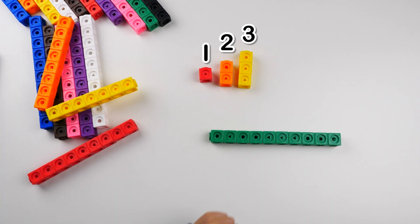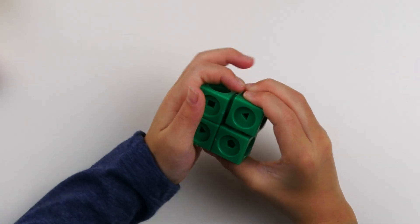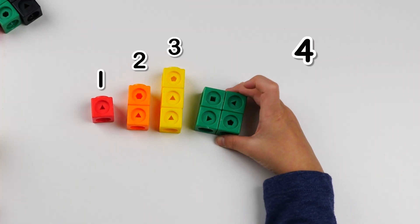Now we are going to make 4. Number block 4 is a square because you can make a square and that's why I love squares. Yeah! 4! Here is number block 4.